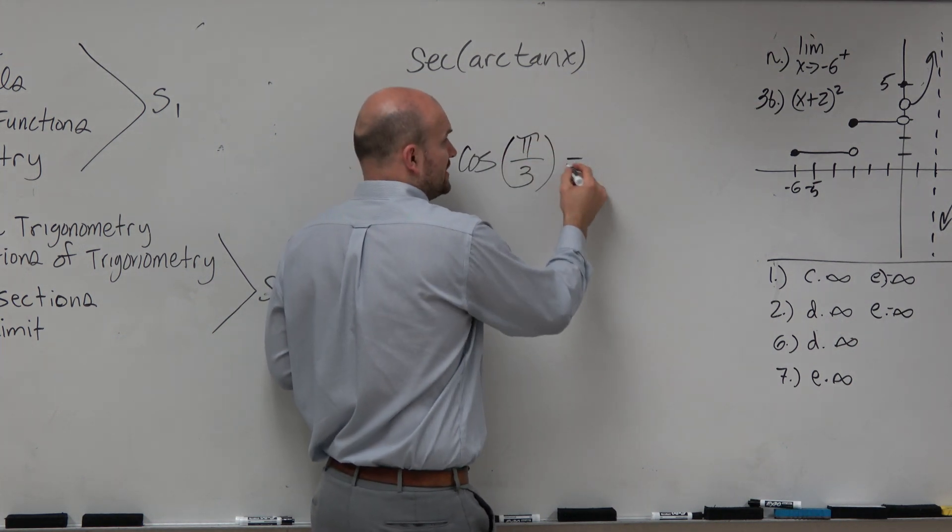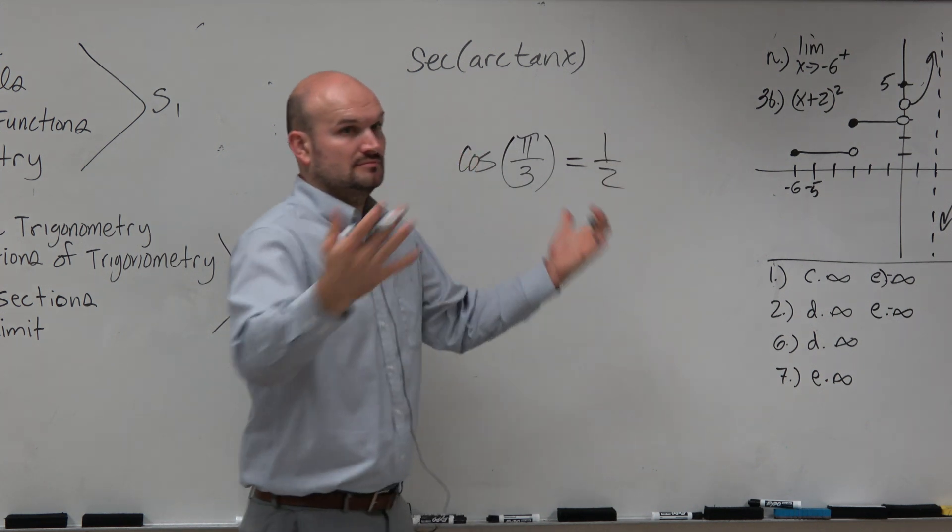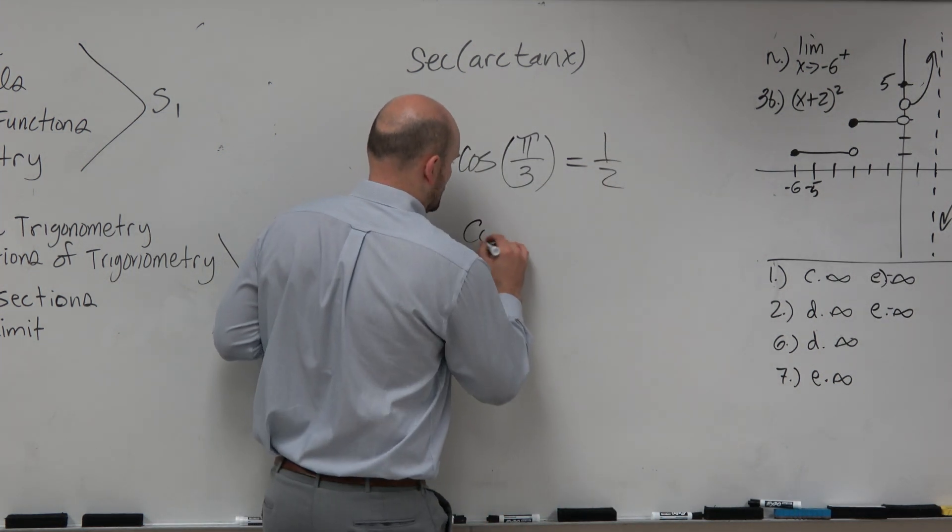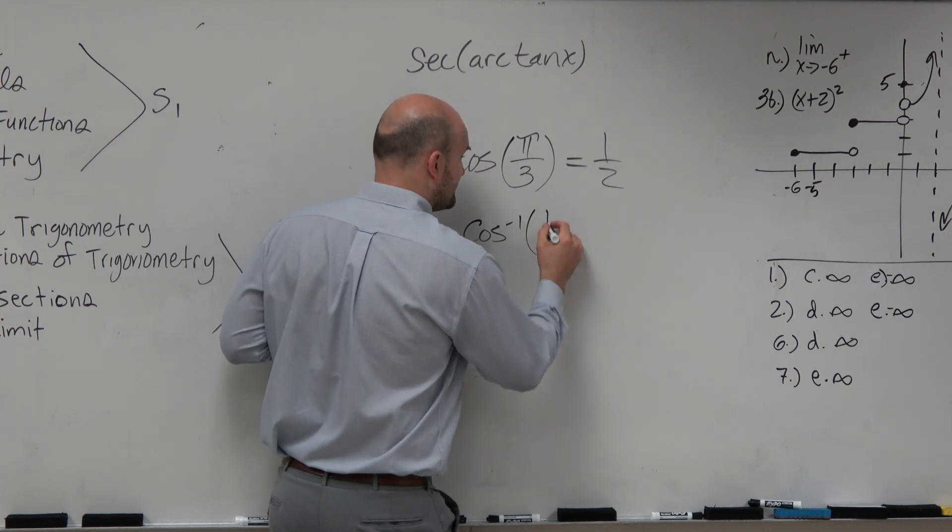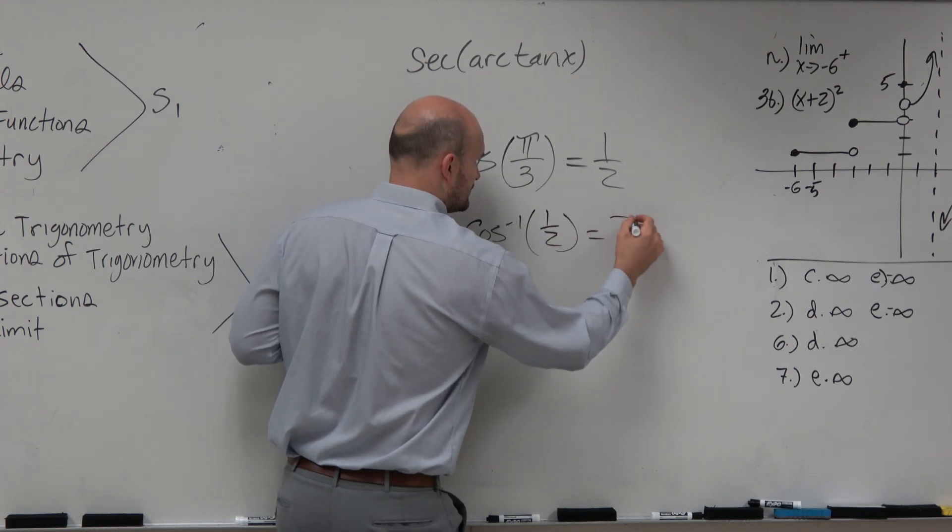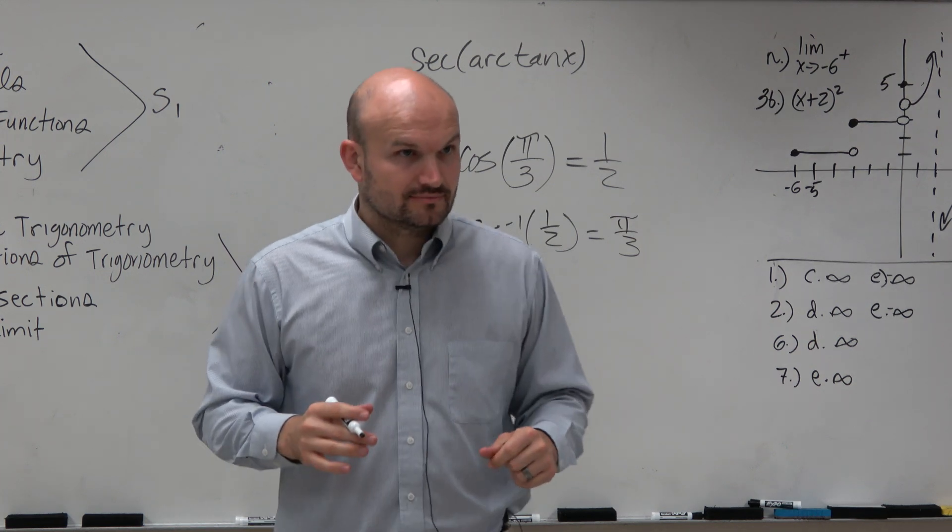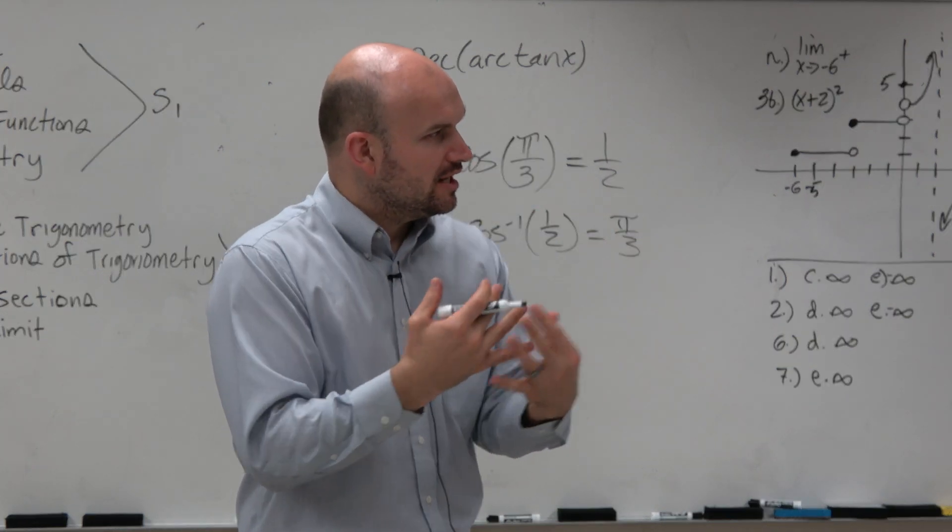The cosine of pi over 3 is equal to 1 half, correct? And if I did the cosine inverse of 1 half, that's equal to pi over 3, right? So that's like that relationship of an angle.